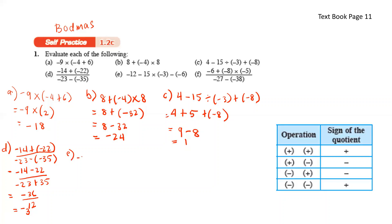Next: negative 12, negative 15 times negative 3 minus negative 6. Do multiplication first: negative and negative gives positive, 15 times 3 is 45. Negative and negative gives positive, so negative 12 plus 45 gives 33.